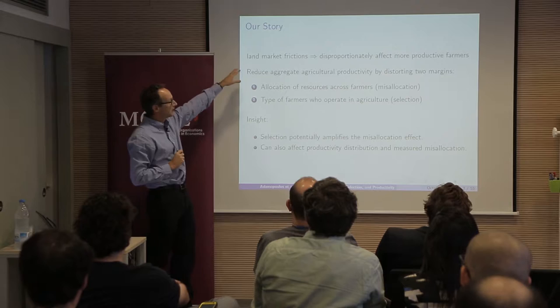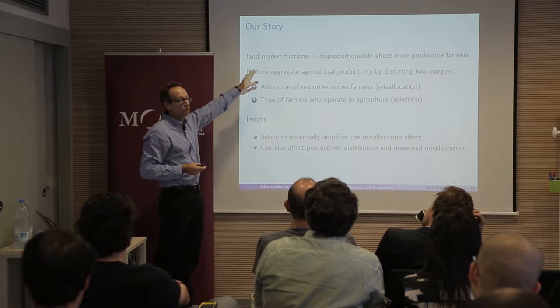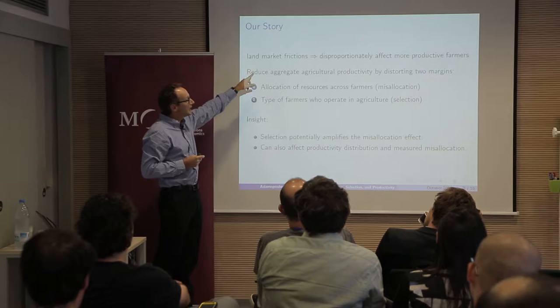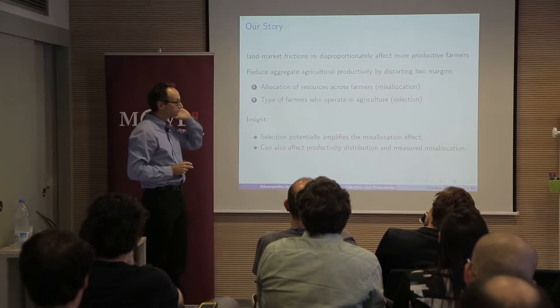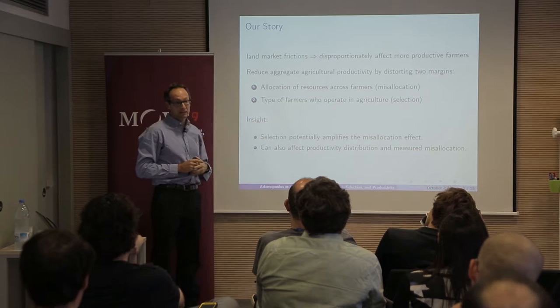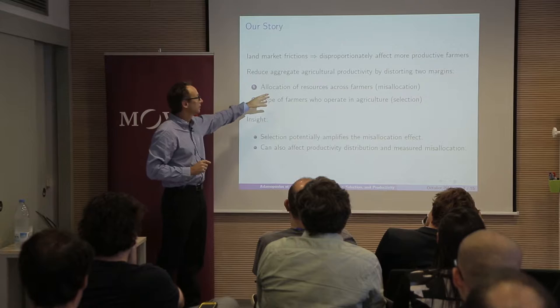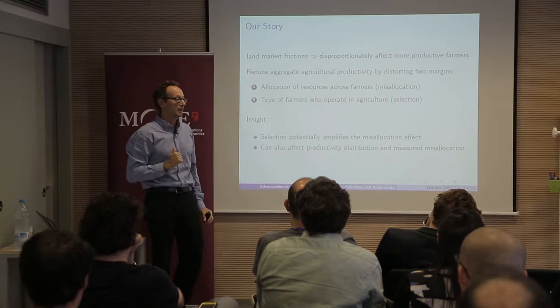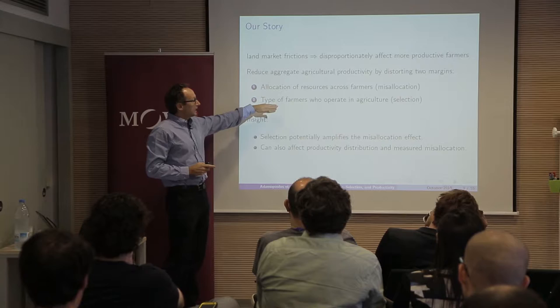The idea in this paper is that there are going to be some land market frictions, motivated by institutions in China. Think about general labor market distortions that are going to disproportionately affect more productive farmers. This will reduce aggregate agricultural productivity for two reasons: the standard misallocation effect on the allocation of resources across farmers, which dampens aggregate productivity — that's a static misallocation effect.